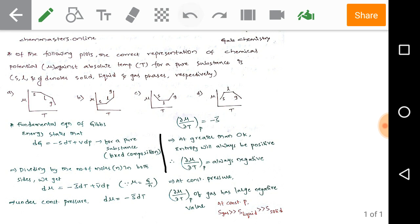entropy will be always positive. Hence dou mu by dou T at constant pressure should be always negative to be entropy positive.